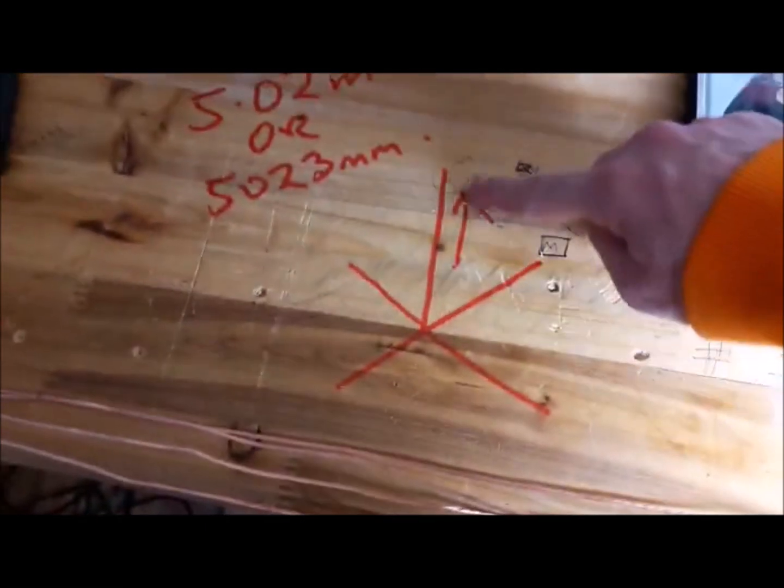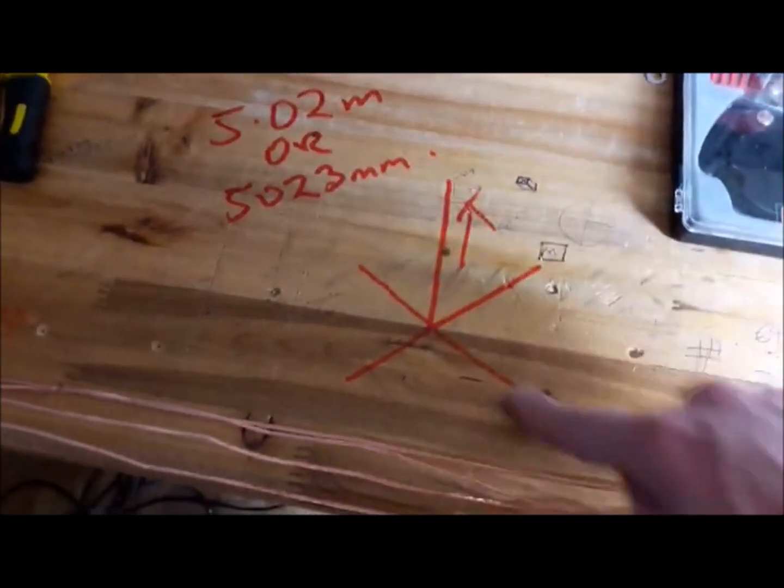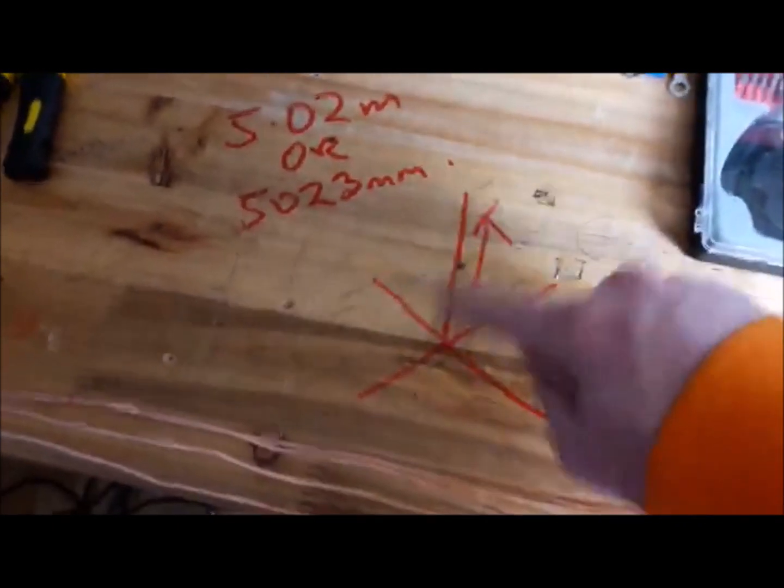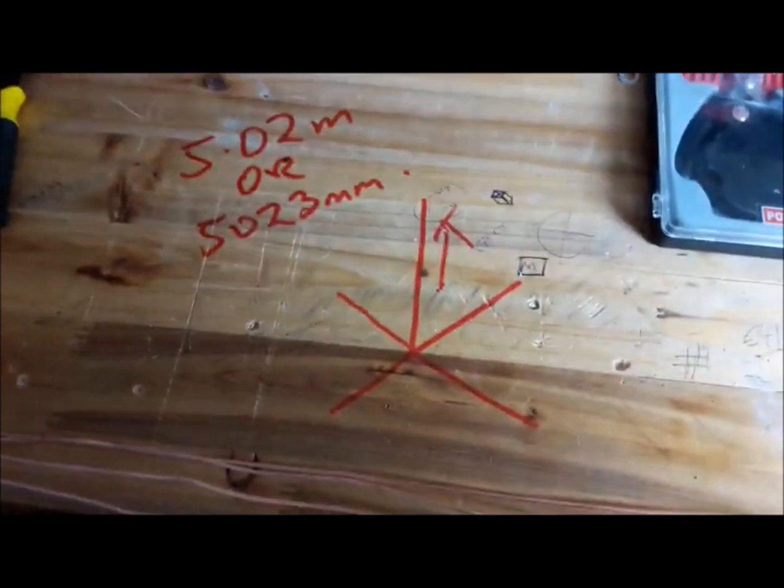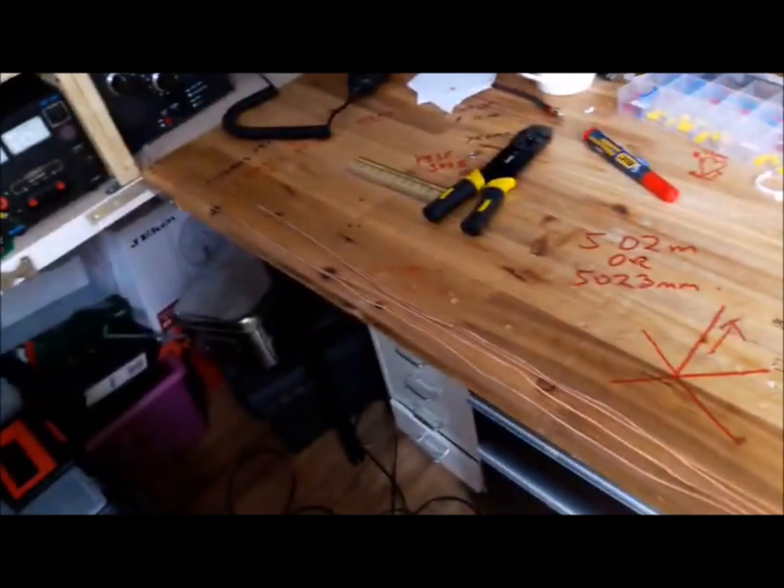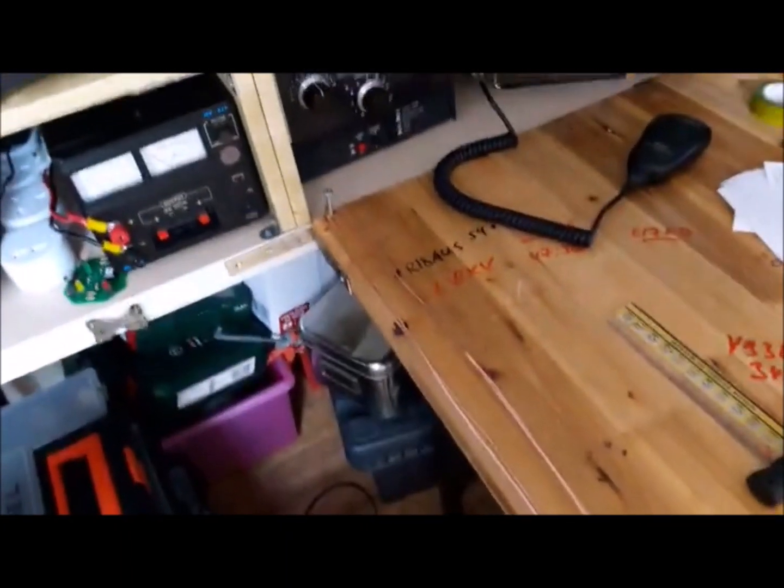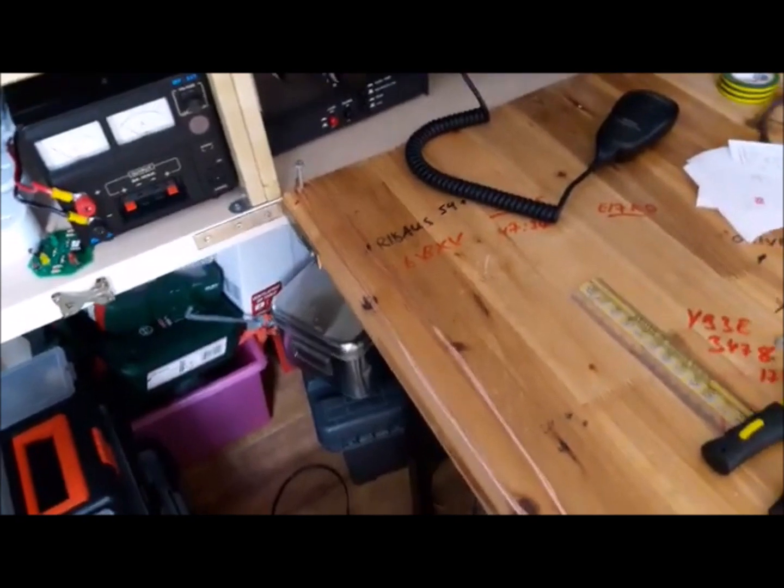The way that will work is you'll have the vertical element sticking up, and then the ground plane with four radials, which are the same length as the vertical part. The way I've done that is just marking out your antenna length. I have two posts here on the workbench, screws. Just run the lengths up and down until you're 5 meters and mark off the .02 at the end.